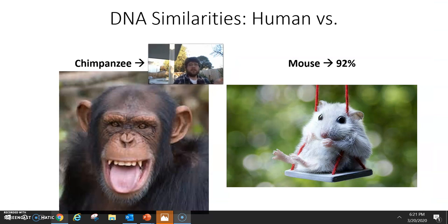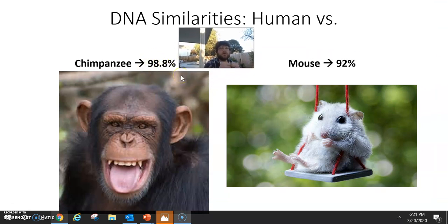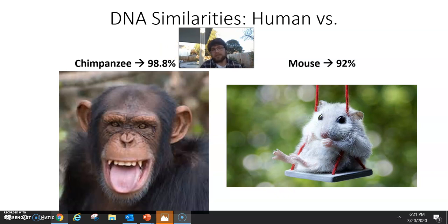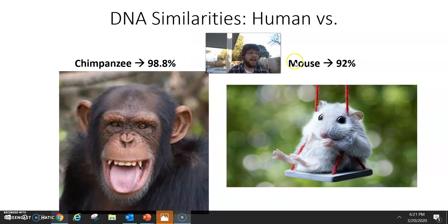They share 98.8% DNA. So if you sequenced every single AT, G, and C between us and chimps, you would have 98.8% of them be identical. But if you looked at mice, that number would still be really high. They're mammals.